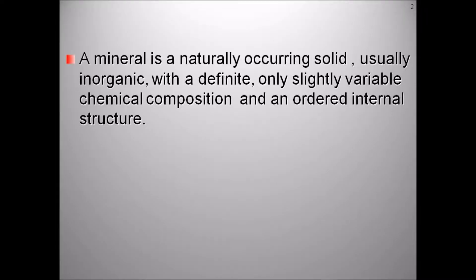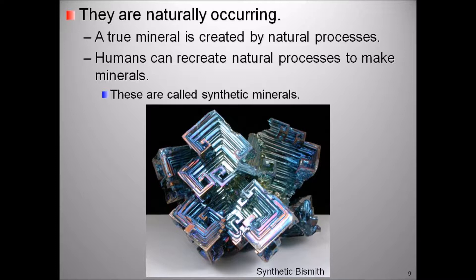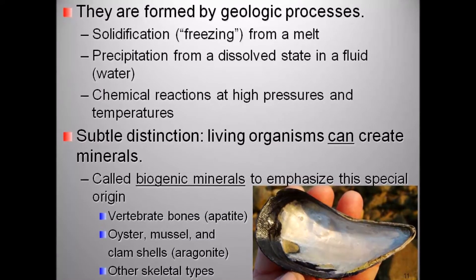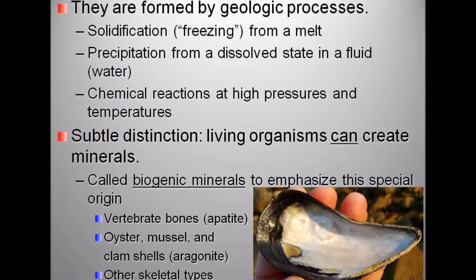So what is a mineral? Geologists define a mineral as a naturally occurring solid, usually inorganic, with a definite, only slightly variable chemical composition and an ordered internal structure. For a mineral to be naturally occurring, they must be formed in nature, not created in factories. Synthetic minerals are manufactured materials. Minerals must be formed by natural processes.